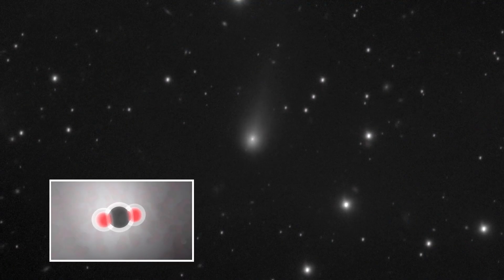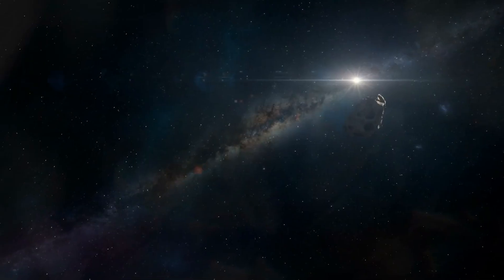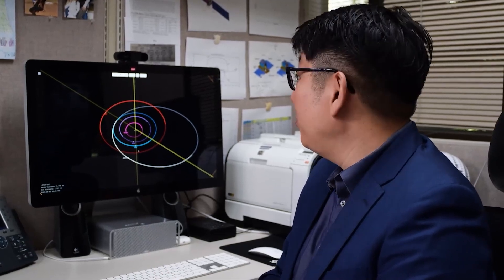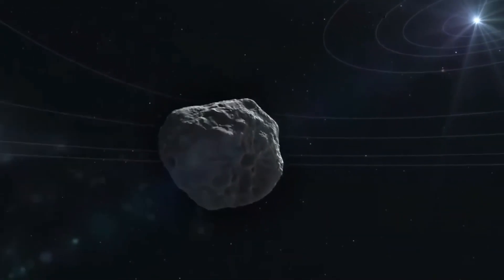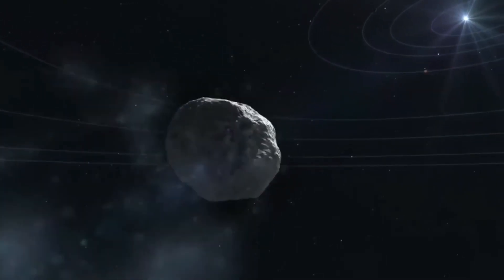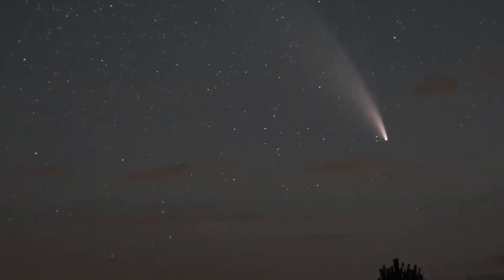This interstellar comet, rich in carbon dioxide, is a fascinating object for study, giving scientists a peek into how other solar systems might form. It's a chance to learn about cosmic chemistry from beyond our neighborhood. But, and this is crucial, it was a distraction.